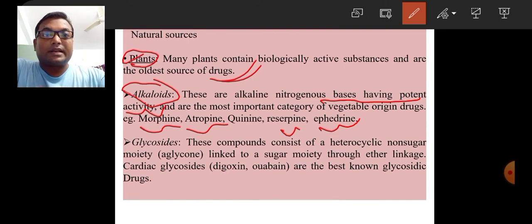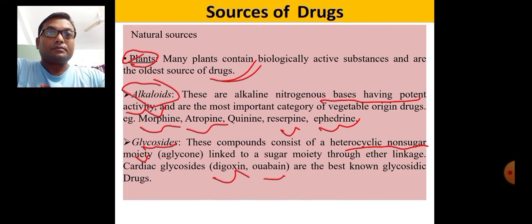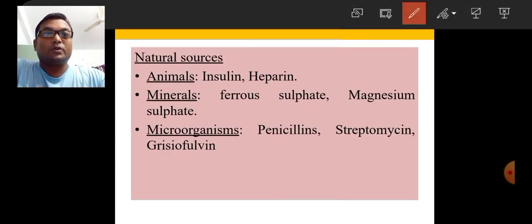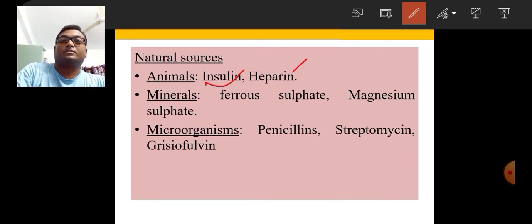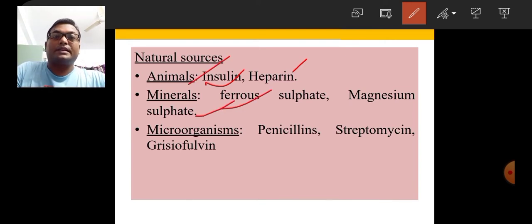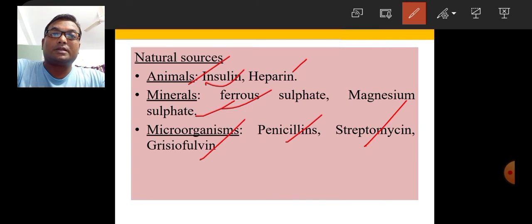Drugs can also be synthesized from glycosides. These compounds consist of a heterocyclic non-sugar moiety called aglycone linked to a sugar moiety through an ether linkage. Cardiac glycoside digoxin is one of the best-known glycosidic drugs. Drugs can also be synthesized from animals — insulin and heparin can be synthesized from animals. Ferrous sulfate and magnesium sulfate can be synthesized from minerals, and some antibiotics like penicillin, streptomycin, and griseofulvin are synthesized from microorganisms.